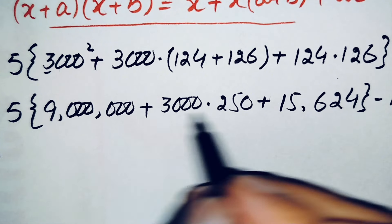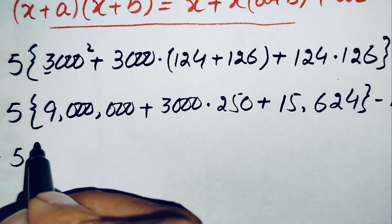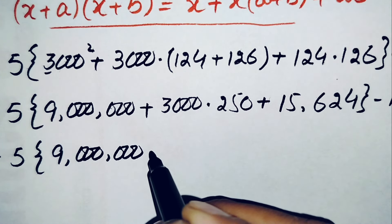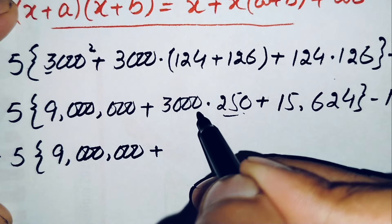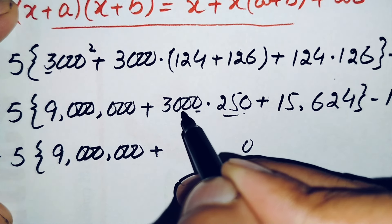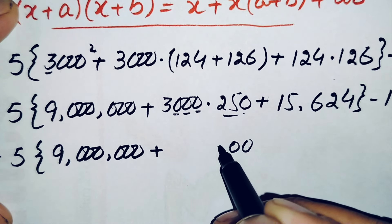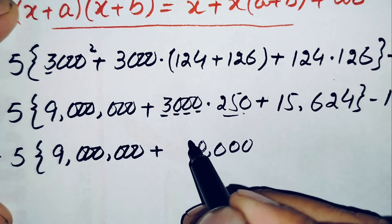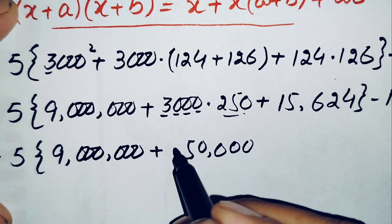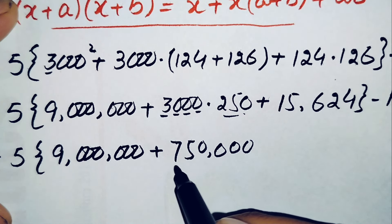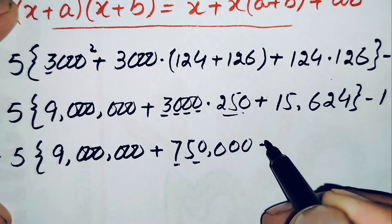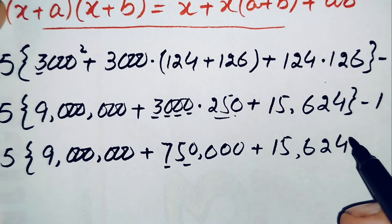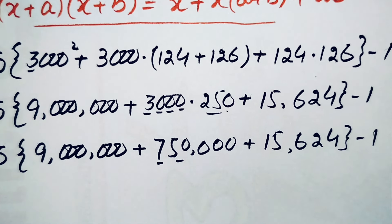We multiply to simplify further. For 3000 times 250: 250 times 0 is 0, 250 times 0 is 0, 250 times 0 is 0, 250 times 3 is 750, giving 750,000. Adding 15,624 inside the braces gives 9,000,000 plus 750,000 plus 15,624, minus 1.